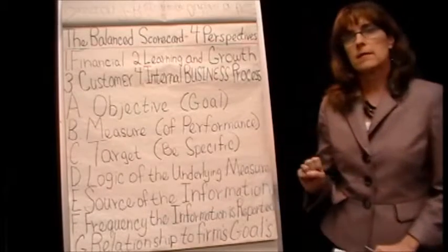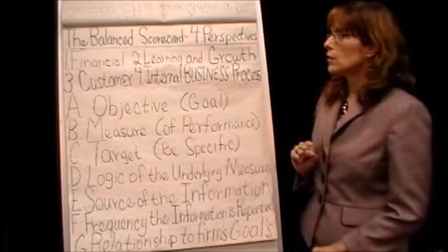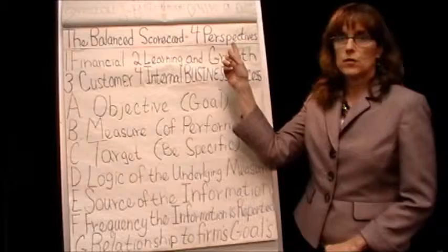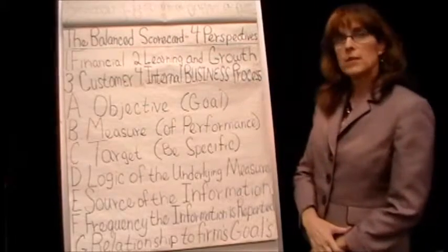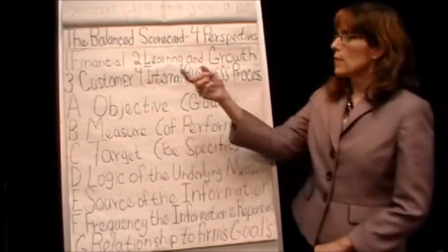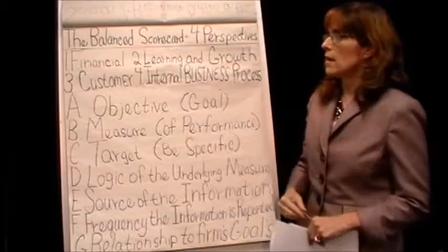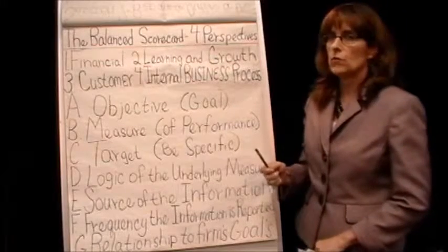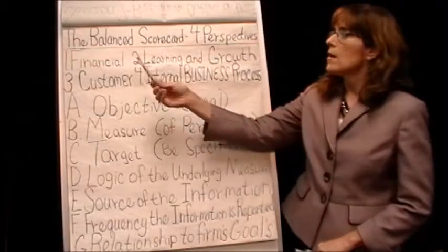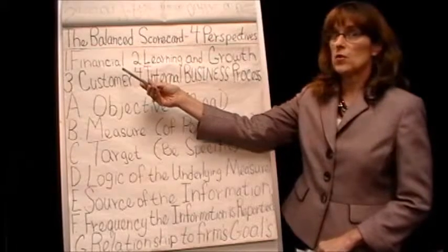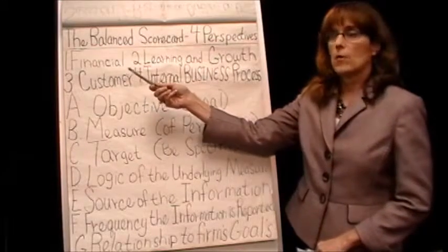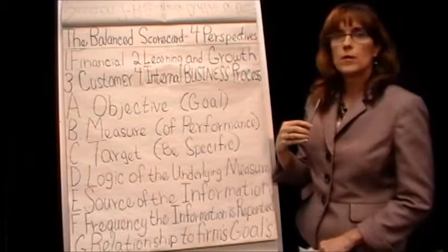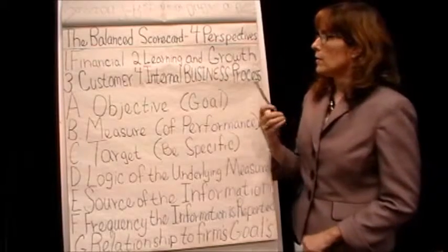Now, in the readings, and in the other clips that I hope you have watched, we learned that there are four perspectives to the Balanced Scorecard. It's developing a balanced set of performance measures. I'm not going to go over these in detail because you should already know a little bit about them, but there's the financial perspective — that's what we're used to measuring. That's been our very traditional performance measurement: how did this affect the bottom line, did I increase my profits?